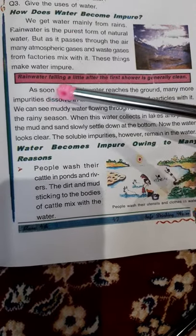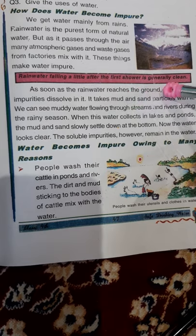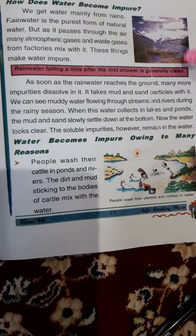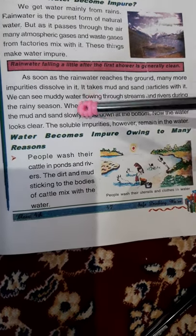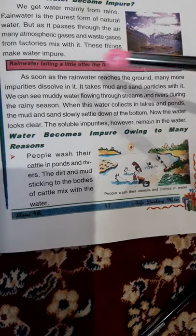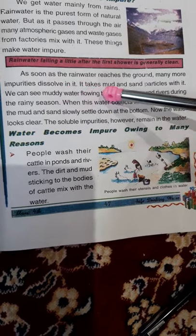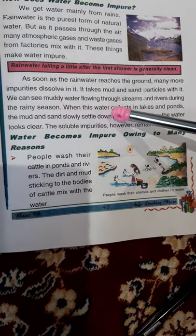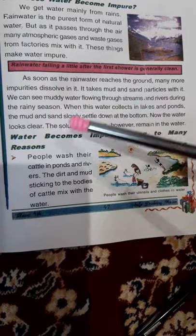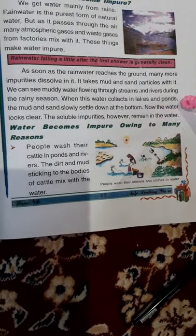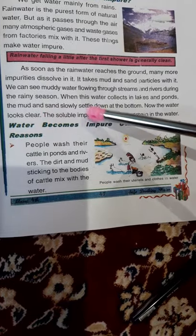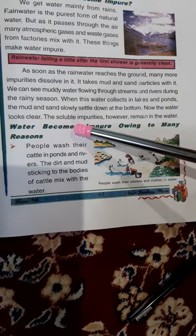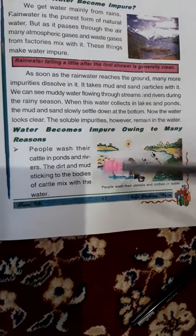Rain water falling after the first shower is generally clean. As soon as rain water reaches the ground, many impurities dissolve in it; it takes mud and sand particles with it. When this water collects in lakes and ponds, the mud and sand slowly settle down at the bottom. The water looks clear, but soluble impurities remain in the water.